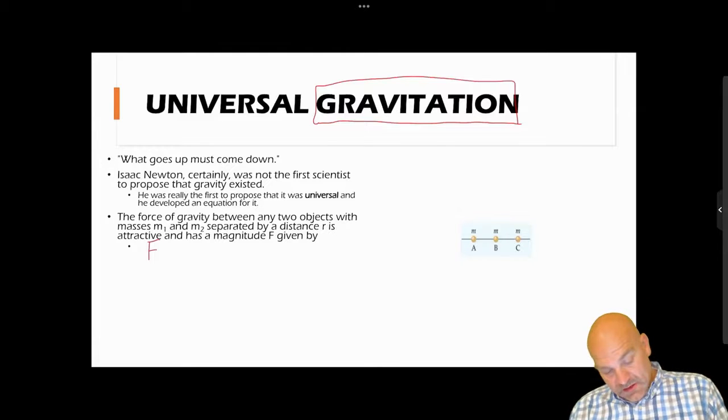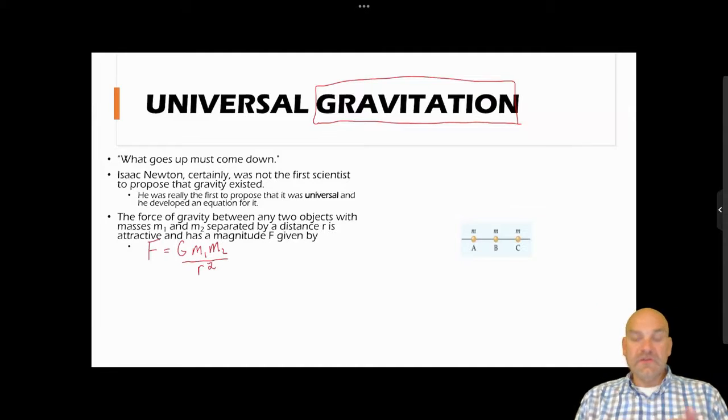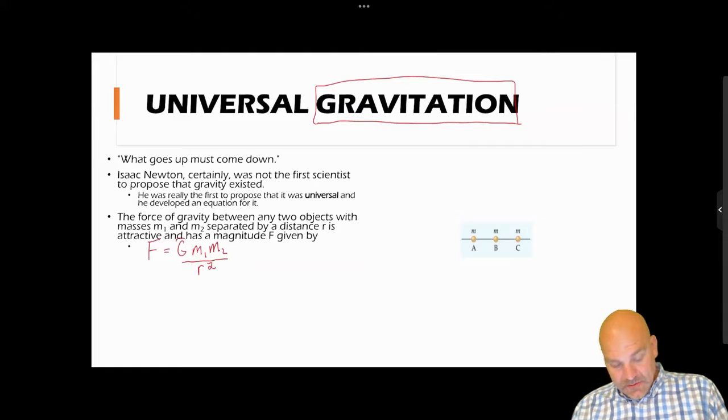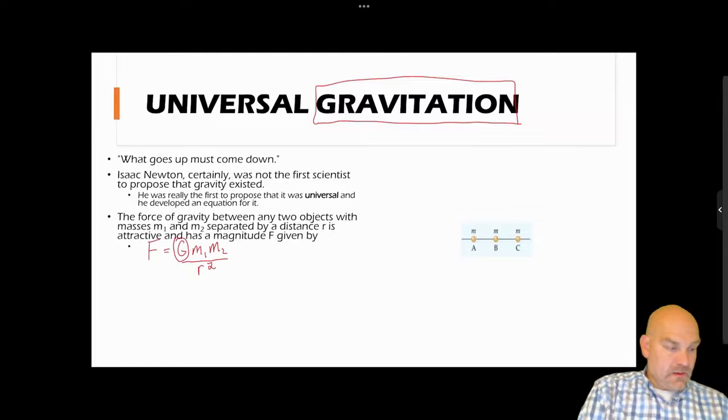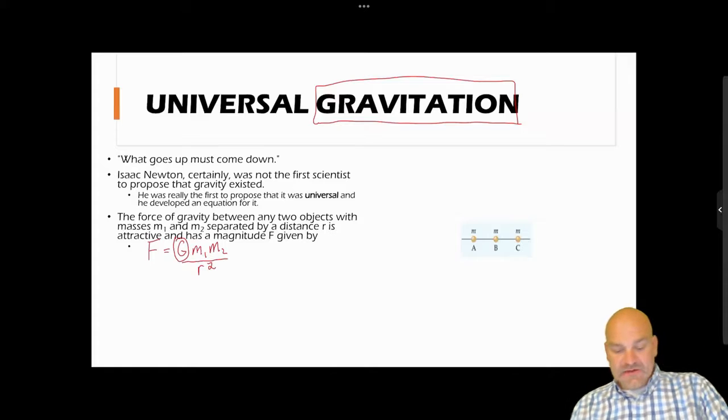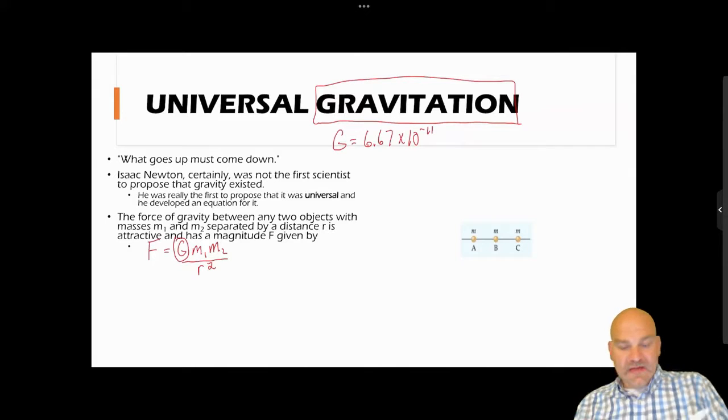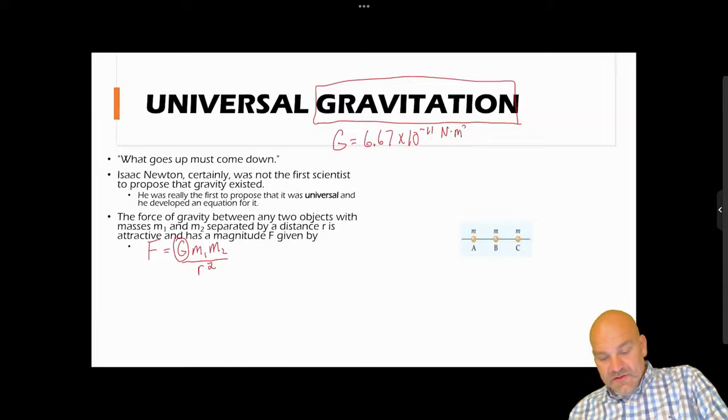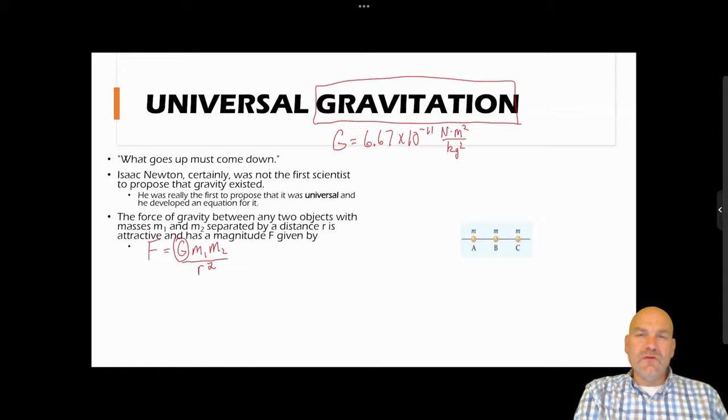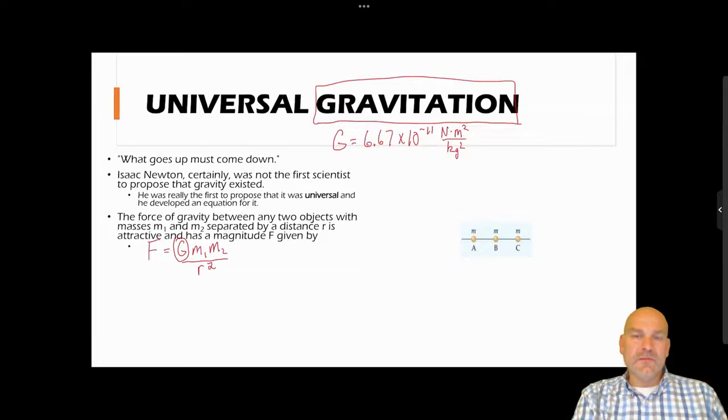Now something to note is that capital G is not lowercase g. Capital G has its own value, and it's what we call the universal gravitation constant. It's simply 6.67 times 10 to the negative 11 newtons times meters squared per kilogram squared. Oftentimes when you do a problem you don't write the unit, so that newton times meters squared per kilogram squared, that's just a little bit of an informality in my opinion.